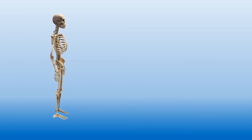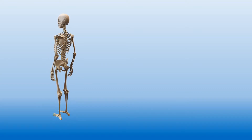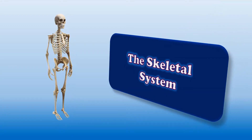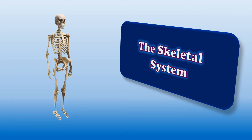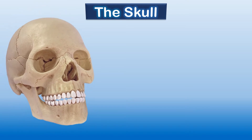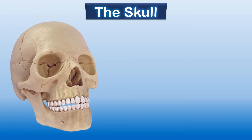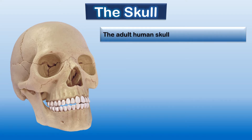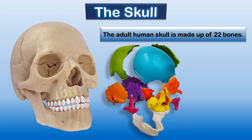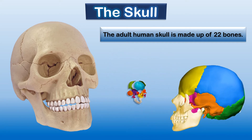In the human skeleton, there are different bones of different shapes and sizes. These bones are very important because they give shape to the body. In today's class we are going to learn about different bones. The adult human skull is made up of 22 bones — 22 different bones that come together to form the human skull.